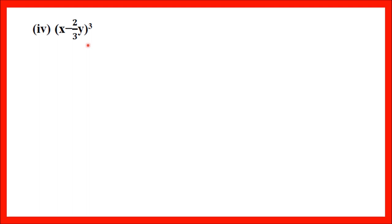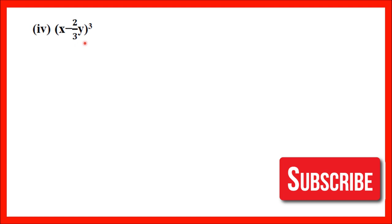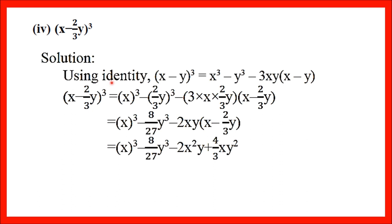Next, Part 4: (x − 2/3 y)³. Identity number 7 will be used — the (x − y)³ identity. Here x stays as x, and y is replaced by 2/3 y. Let's see the solution: using identity (x − y)³ = x³ − y³ − 3xy(x − y). We will put x = x and y = 2/3 y.